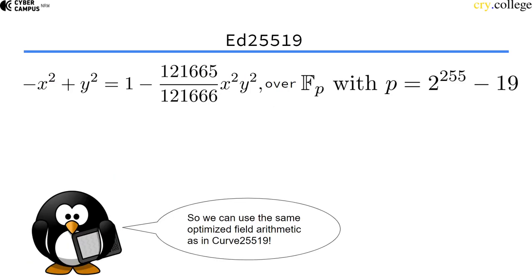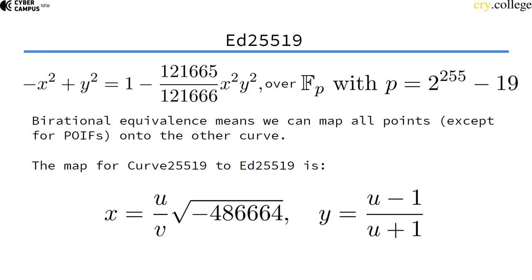So we have the same curve just expressed as an Edwards curve with the same optimized field arithmetic as in curve 25519. We have an equivalent curve just in Edwards form. Now birational equivalence means we can map all points except for the points at infinity onto the other curve.